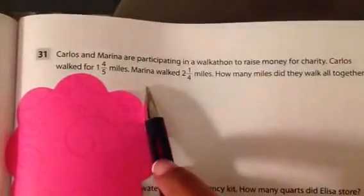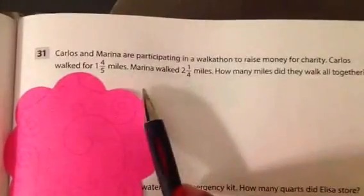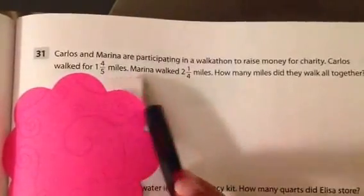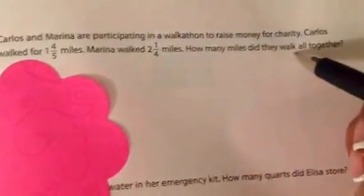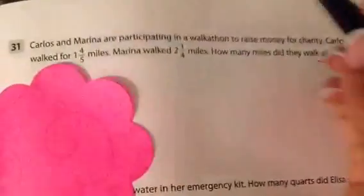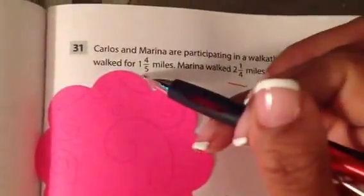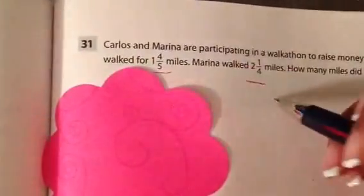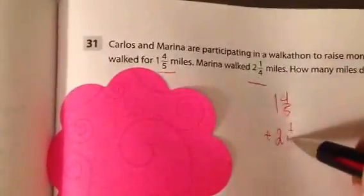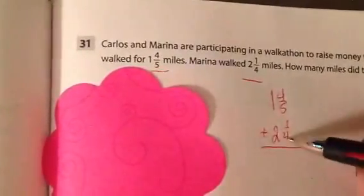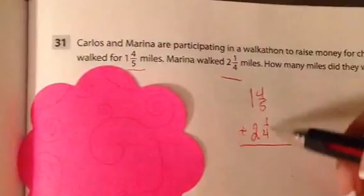So Carlos and Marina are participating in a walkathon. Carlos walked 1 and 4/5 miles, Marina walked 2 and 1/4. How many miles do they walk all together? The key words are they're walking all together. So that's telling me I'm going to take these two amounts and add them up. So 1 and 4/5 plus 2 and 1/4.